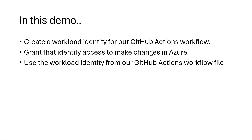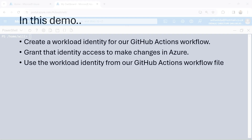So let's see how this works. In this demo, we'll create a workload identity for our GitHub Actions workflow file, then we'll grant that identity the permissions it needs to make changes to our Azure environment, and then we'll use the workload identity that we've created in our GitHub Actions workflow file. Let's dive in.